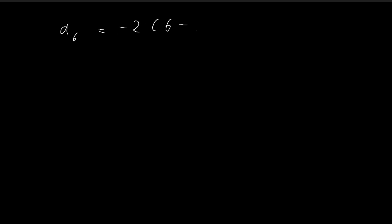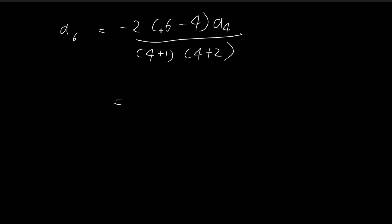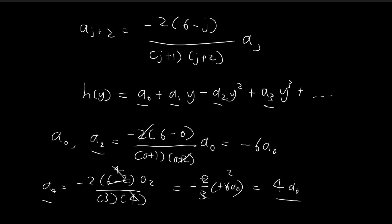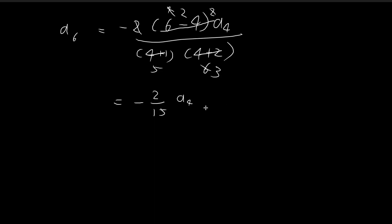Given A4, we can deduce what A6 should be. By the recursion formula, A6 equals negative 2 times (6 minus 4) times A4, divided by (4 plus 1)(4 plus 2), which is 5 times 6. The numerator gives 2 times 2 equals 4, and the denominator is 30, so we get negative 2 over 15 times A4. Since A4 equals 4 A0, A6 equals negative 8 over 15 A0.